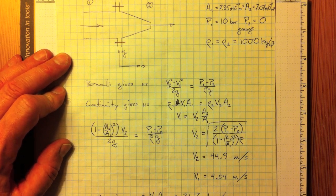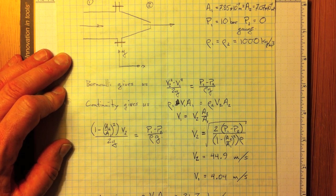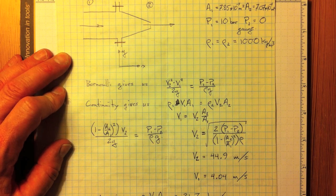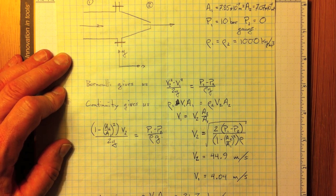M dot equal to rho V1 A1, 31.7 kilograms per second. We really should get the same answer if we calculated rho V2 A2, and we would.